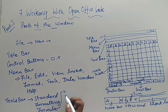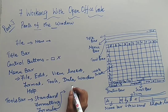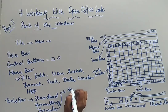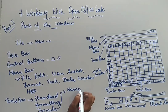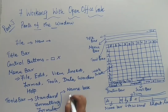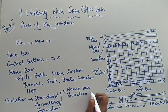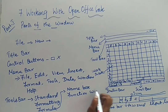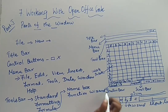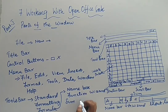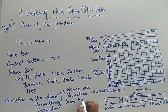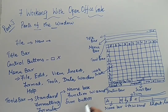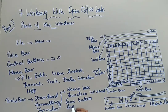Under this Formula Bar, we are having a few elements: the first one is your Name Box, the next one is your Function Wizard, and the next one is your Sum Button, and the last one we finished is your Input Line.